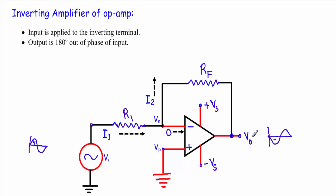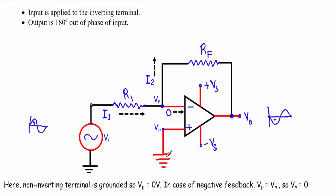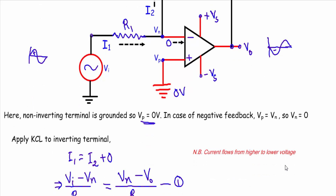Now let me derive the equation of this output voltage. This is our inverting terminal and this is our non-inverting terminal. The non-inverting terminal is directly grounded, therefore Vp equals zero. When we connect any terminal to ground, that terminal's potential is also zero volts. In the case of negative feedback, Vp and Vn are equal, so I can write Vp = Vn. Since Vp = 0, consequently Vn = 0 as well.